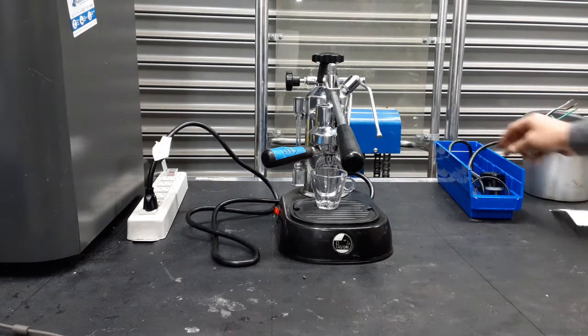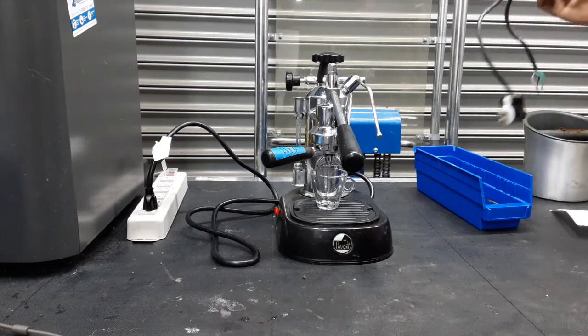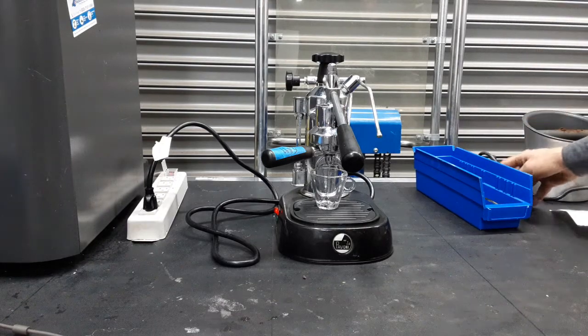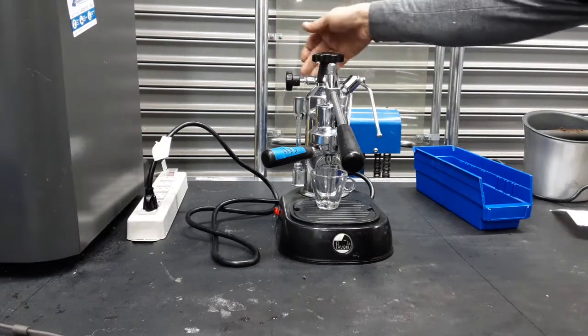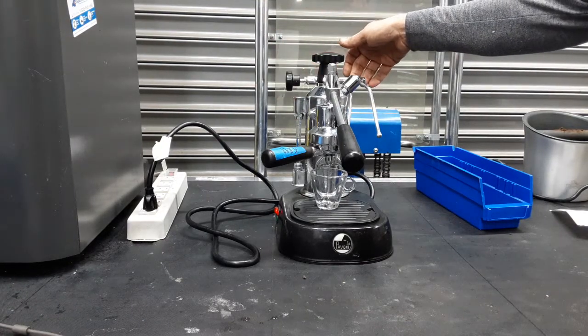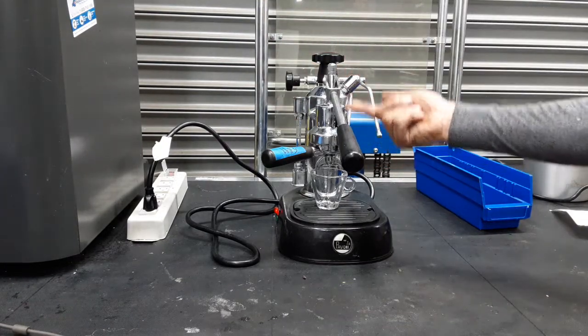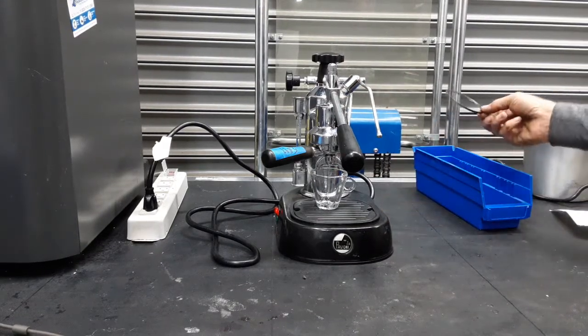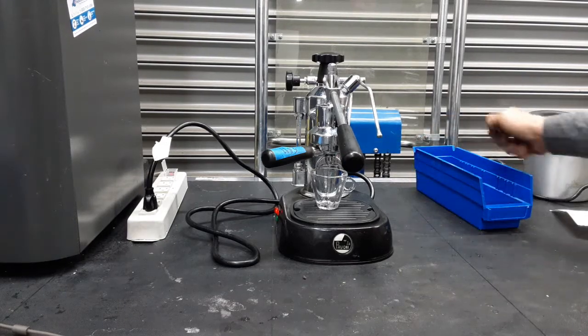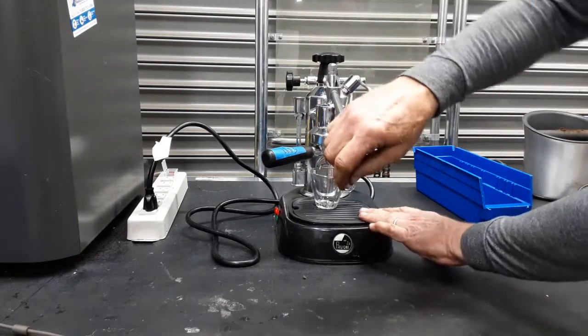This espresso machine came in, we put a new plug on it with a nice safety ground, replaced all gaskets, sight glass, rebuilt the steam valve, of course cleaned the group head and everything. Also had a leak on the bottom, we changed the gasket to the boiler, so let's see how we're going to check it out.